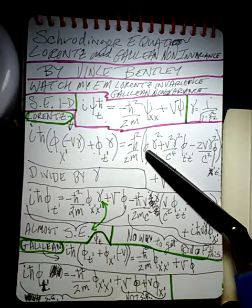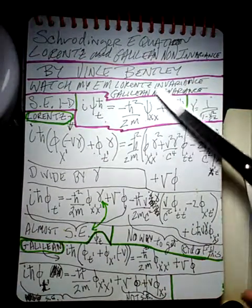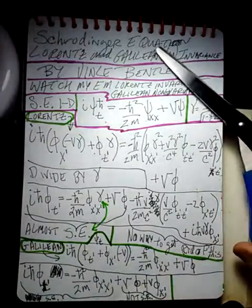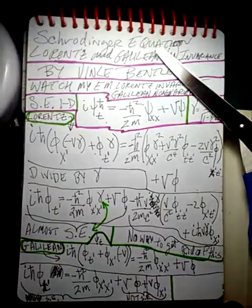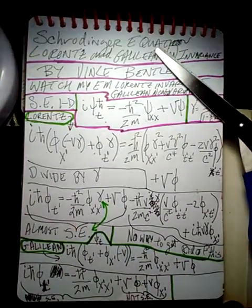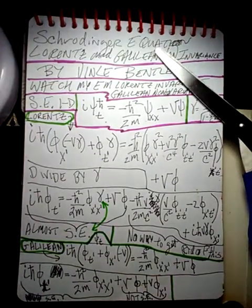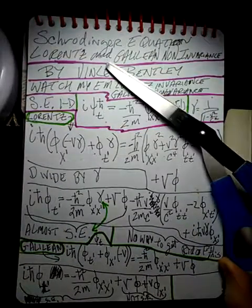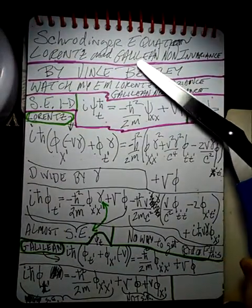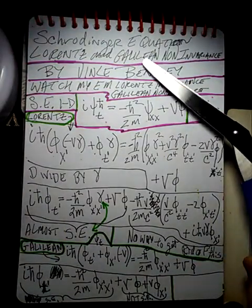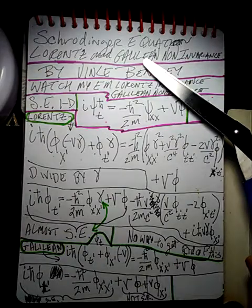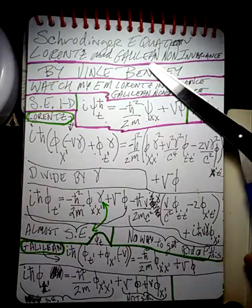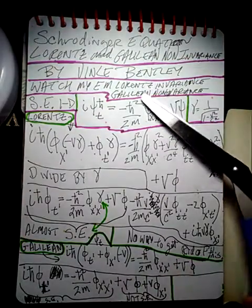Today we're going to show that the Schrödinger equation is not Lorentz or Galilean invariant. So let's get started.